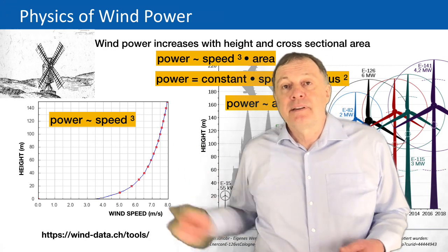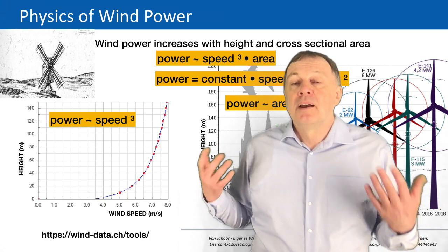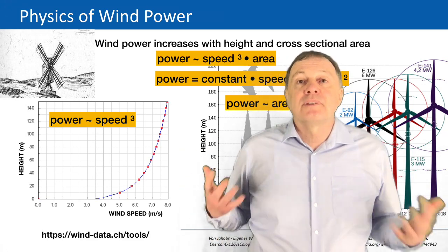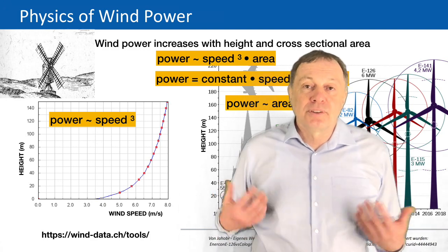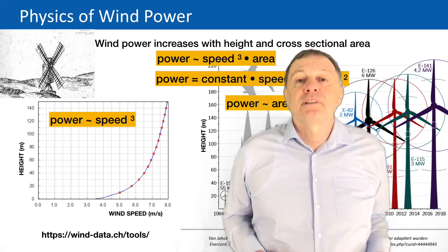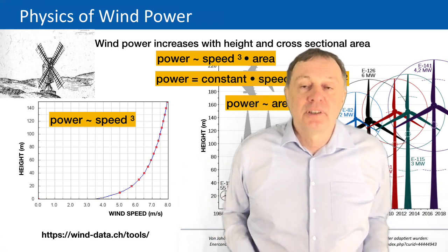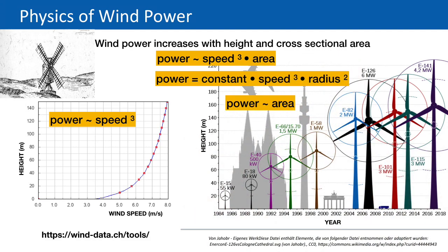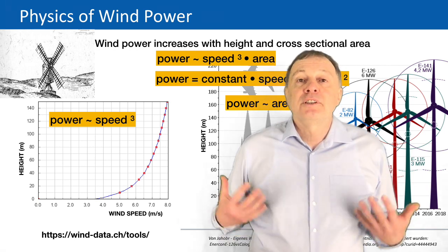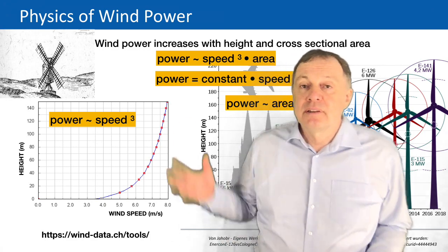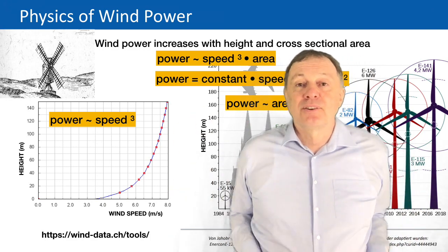If a quantity is proportional to two things, it's also proportional to their product. So power is proportional to v³ times area. If you double the area, you double the power; if you double the speed, you get eightfold the power; if you double both, you get sixteen times the power. Adding a proportionality constant gives the equation: power = constant × v³ × R². We'll discuss the constant later.